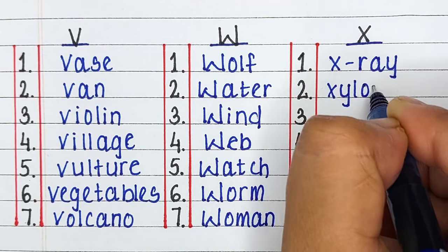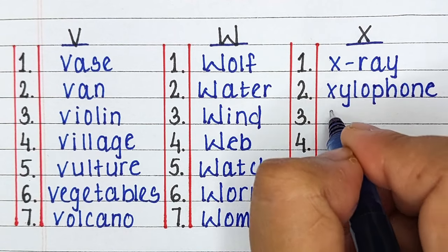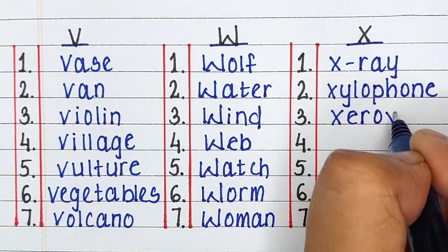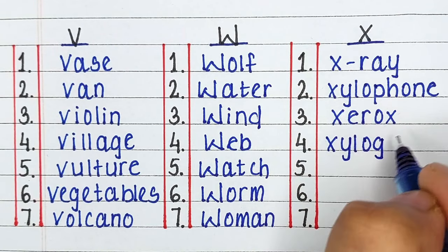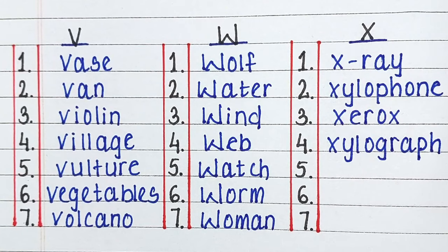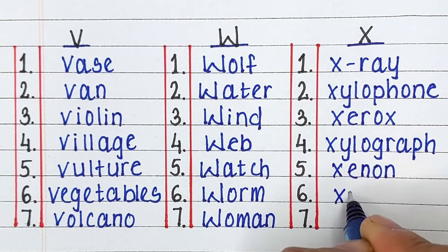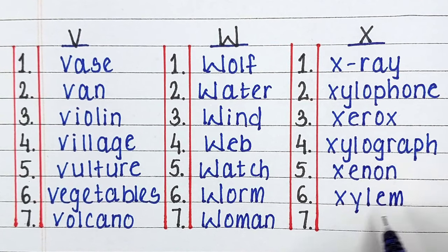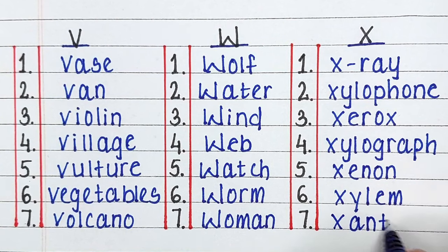Next up we have Alphabet X. The words starting from letter X are X-Ray, Xylophone, Xerox, Xylograph, Xenon, Xylem and Xanthic.